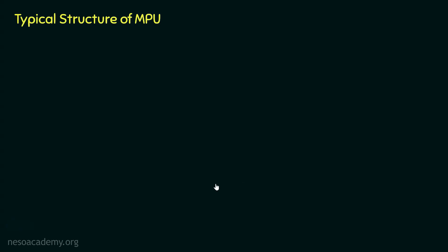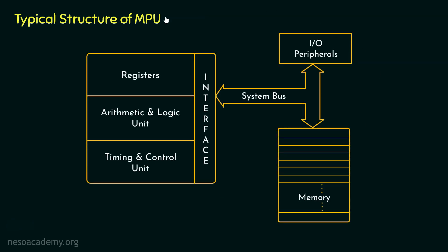During the very first session of this microprocessors and microcontrollers subject, we observed the basic block diagram of a computer system. There I also told you this is the microprocessing unit. Now what are the different sections it has? The Register section, the Arithmetic and Logic unit (ALU), the Timing and Control unit, and the Interface section. Today we are going to learn about this typical structure of the microprocessing unit with respect to the 8085 microprocessor.